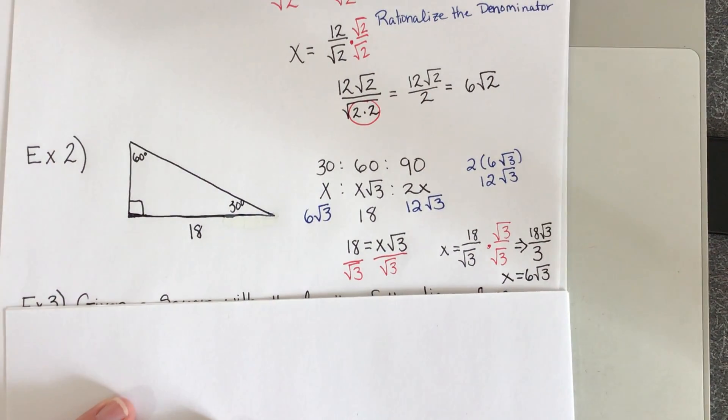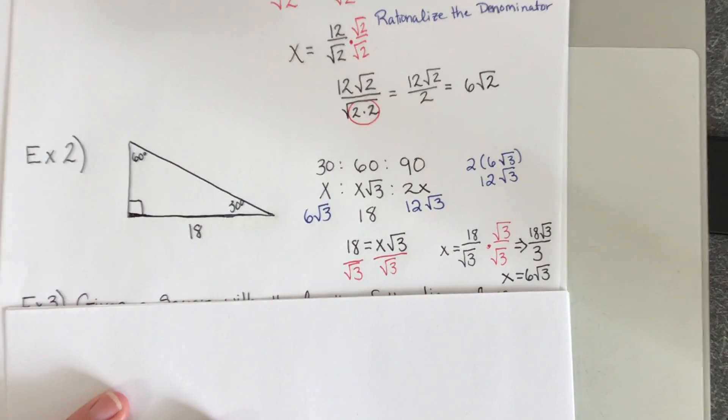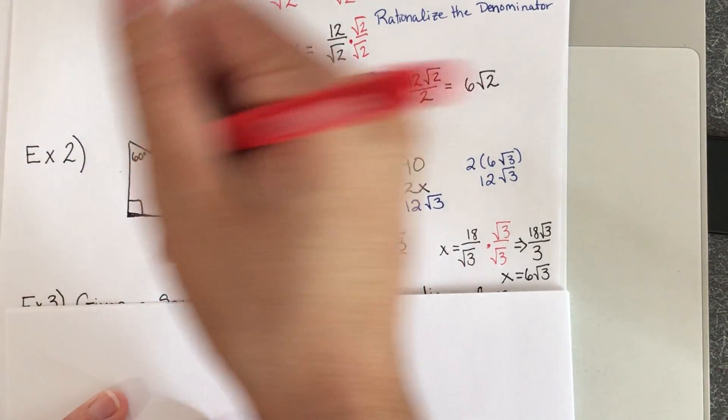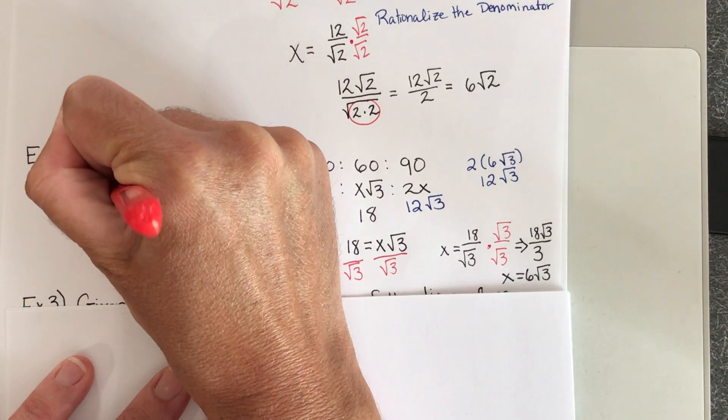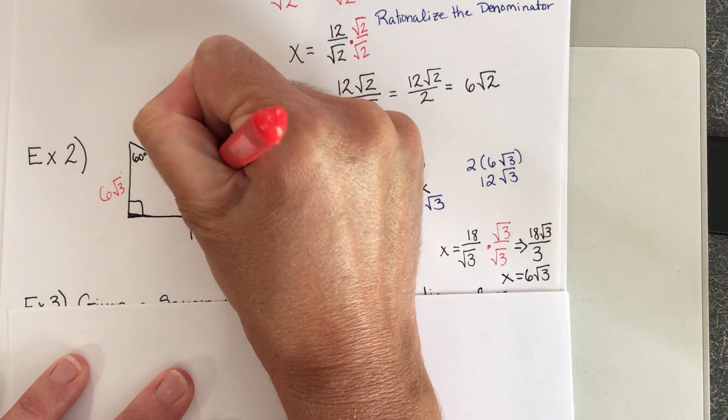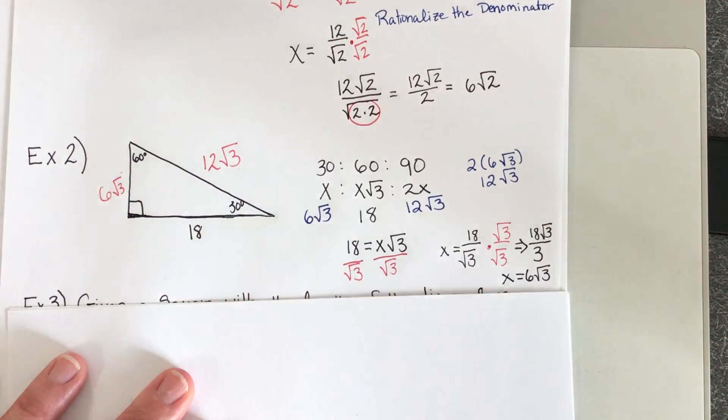So now I know all three of my sides and all three of my angles of this special right triangle: 30, 60, 90. My short leg is 6 times the square root of 3. My longer leg is 18. And my hypotenuse is 12 times the square root of 3.